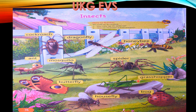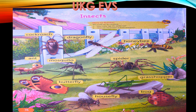Grasshopper — it is green in color. Then bug — bug is in orange or green in color. It is brown in color — B U G — bug.